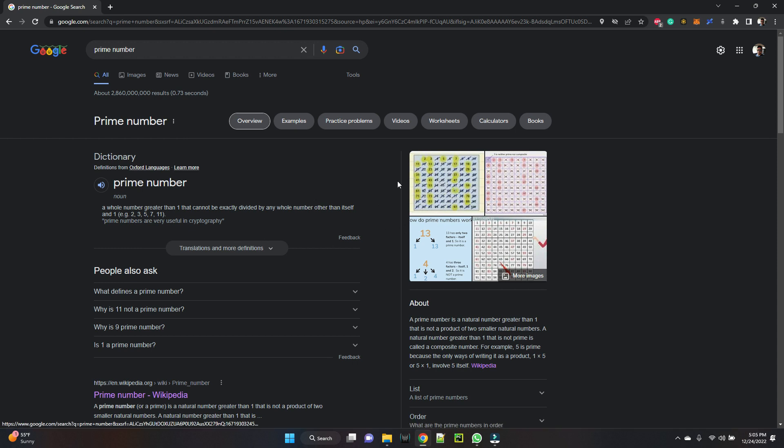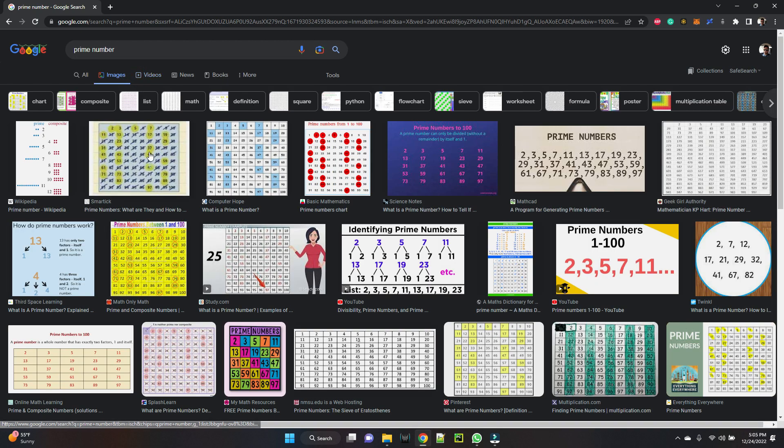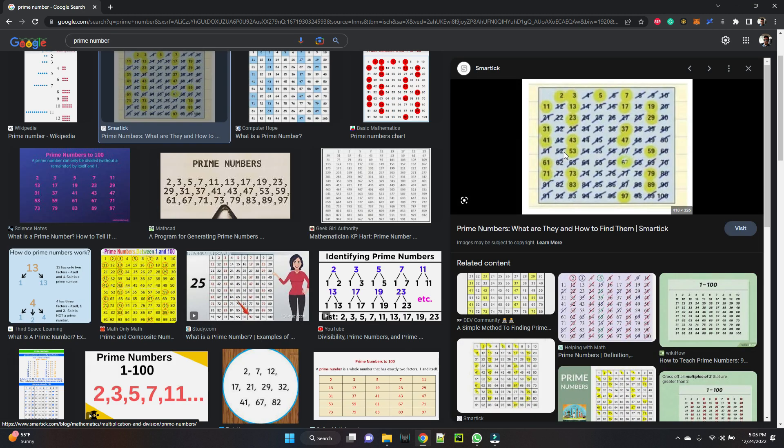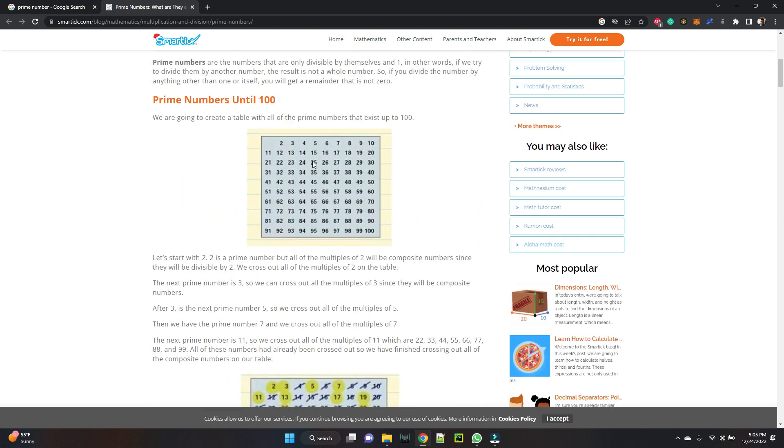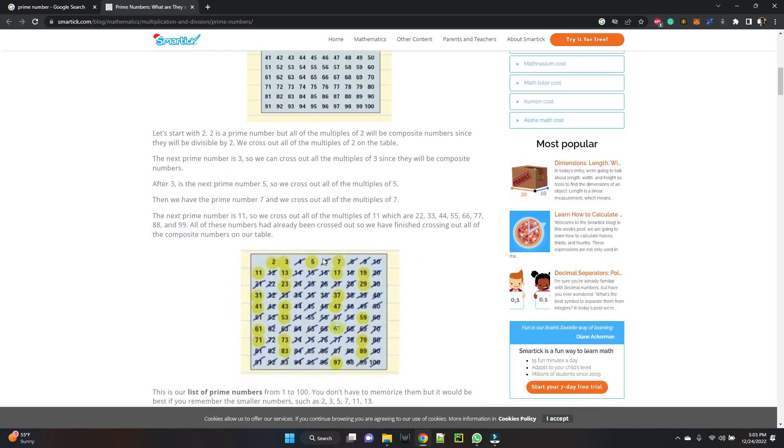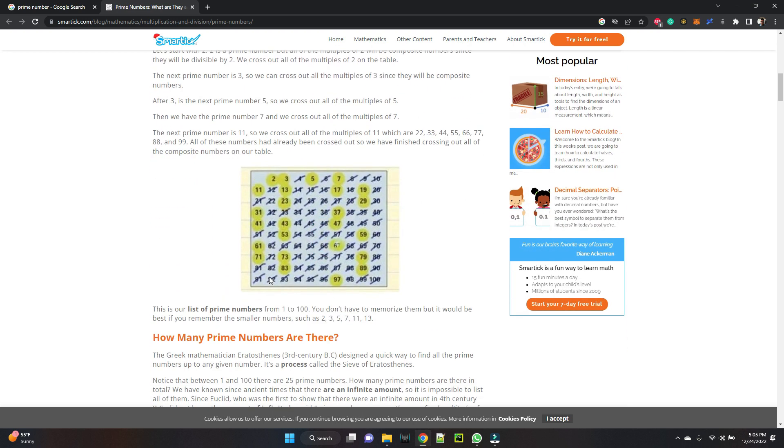Understanding the prime numbers from 1 to 100 and knowing them is one of the best things before we start solving problems from the chapter number systems. Let's just open this specific website. Any website can give you all the information regarding prime numbers.